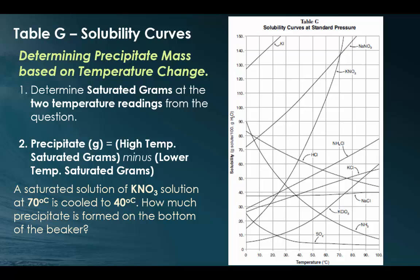So let's try this problem. We have a saturated solution of potassium nitrate, and it is at 70 degrees Celsius. It is then cooled down to 40 degrees Celsius. How much precipitate is formed in the bottom of the beaker? All you have to do is figure out how many grams of potassium nitrate is at 70 degrees Celsius, which we're noticing is the point on the very top, and then you take the number of grams found at 40 degrees Celsius, which is the point on the bottom, and you subtract those gram amounts from each other. So you should notice 135 minus 65 tells us that about 70 grams of potassium nitrate will solidify and precipitate out of the solution.